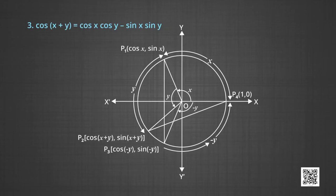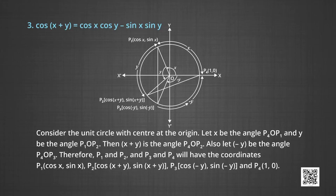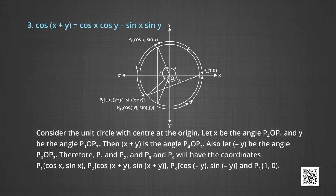Consider a unit circle with the centre at the origin. Let x be the angle P4OP1 and y be the angle P1OP2. Then x+y is the angle P4OP2. Also, let -y be the angle P4OP3. Therefore, P1 has coordinates (cos x, sin x), P2 has coordinates (cos(x+y), sin(x+y)), P3 has coordinates (cos(-y), sin(-y)), and P4 has coordinates (1, 0).